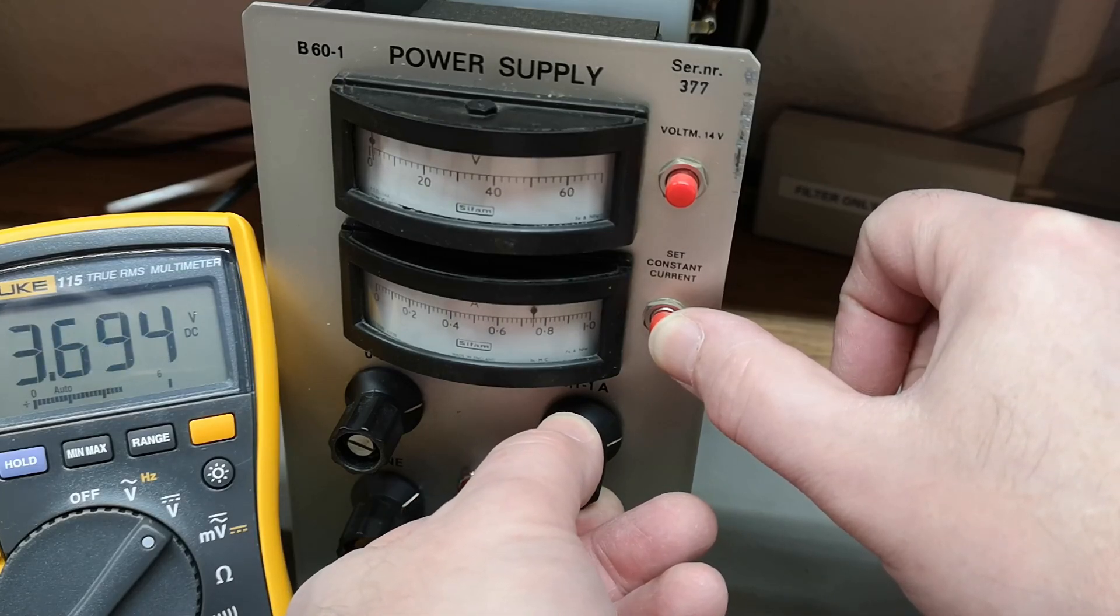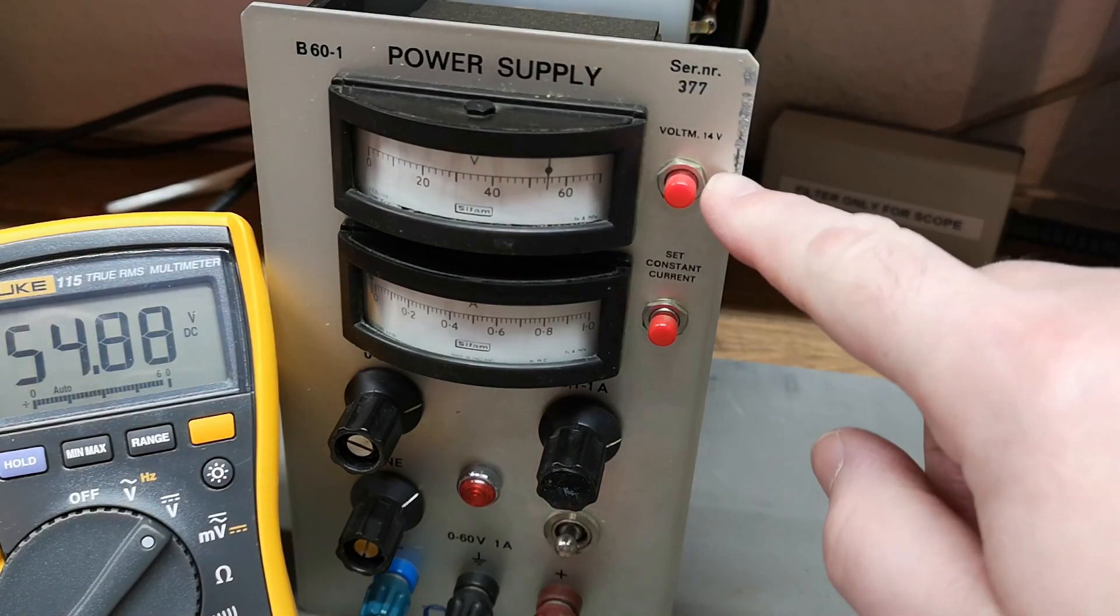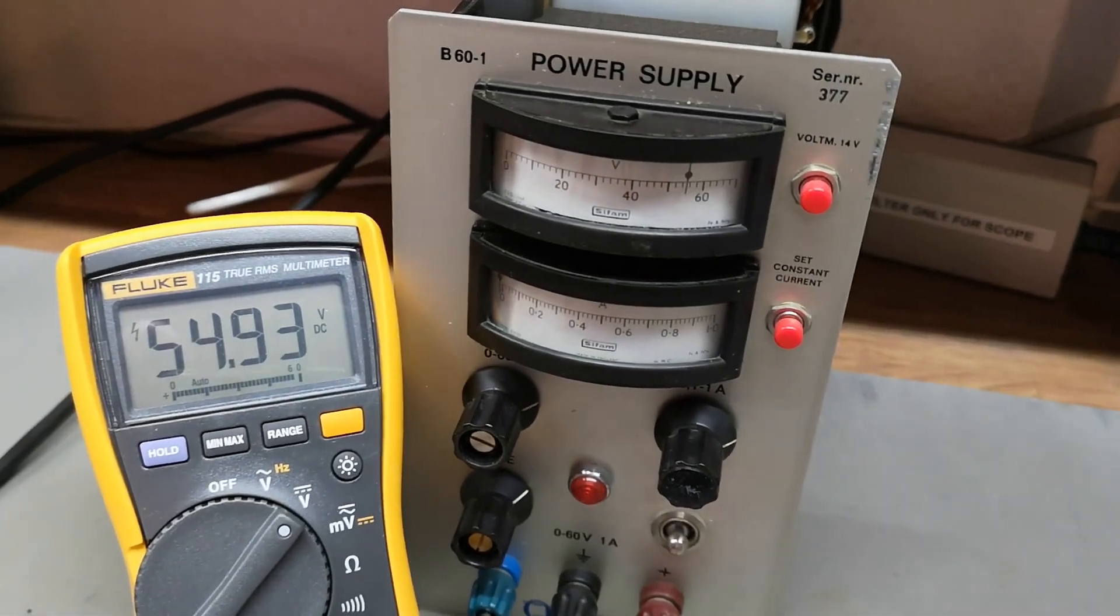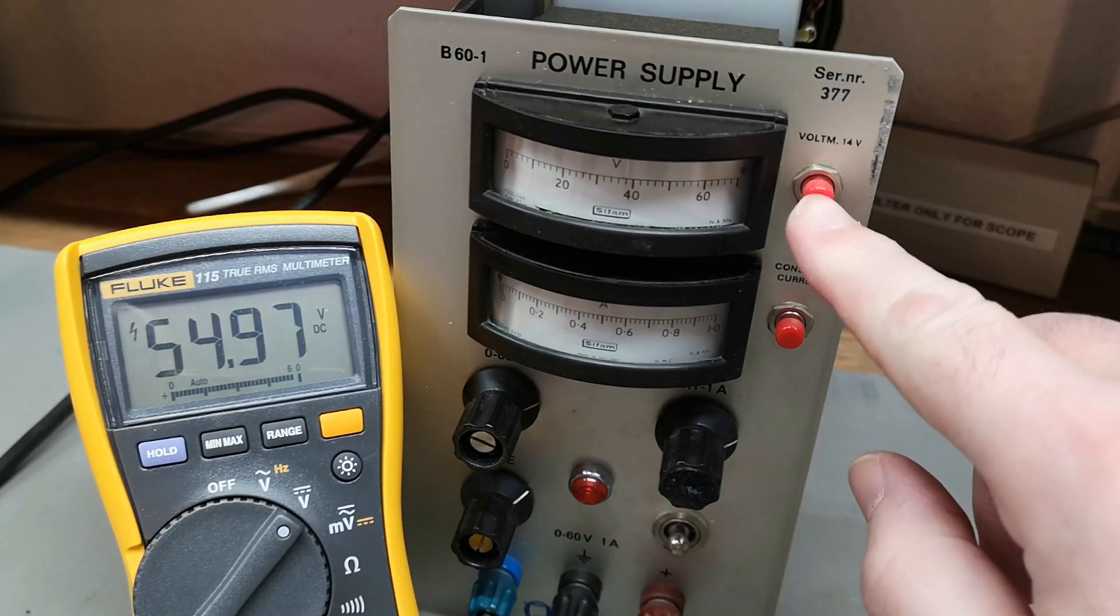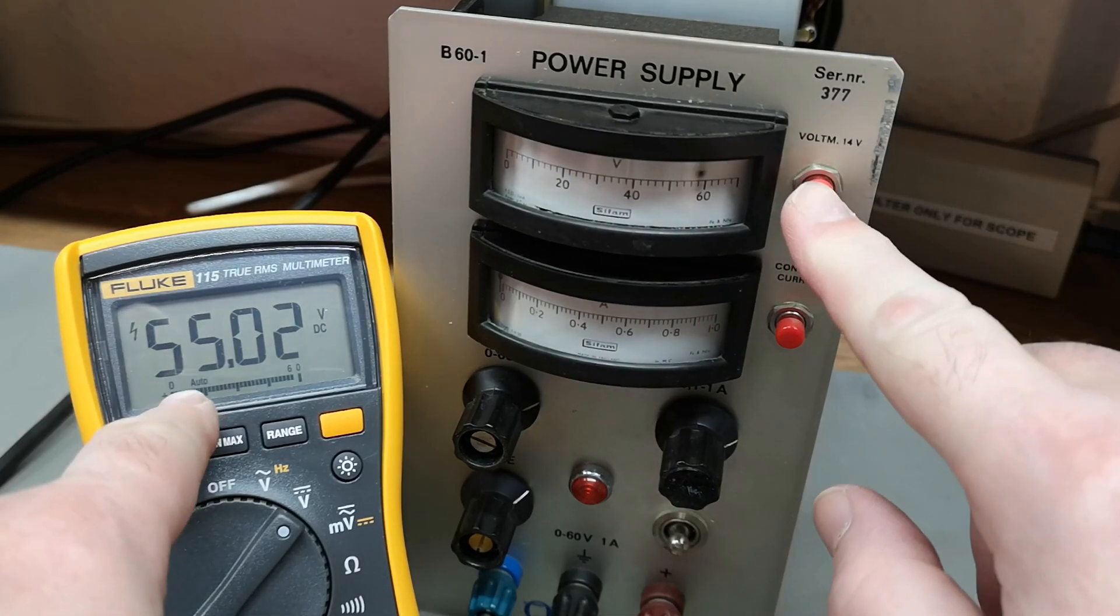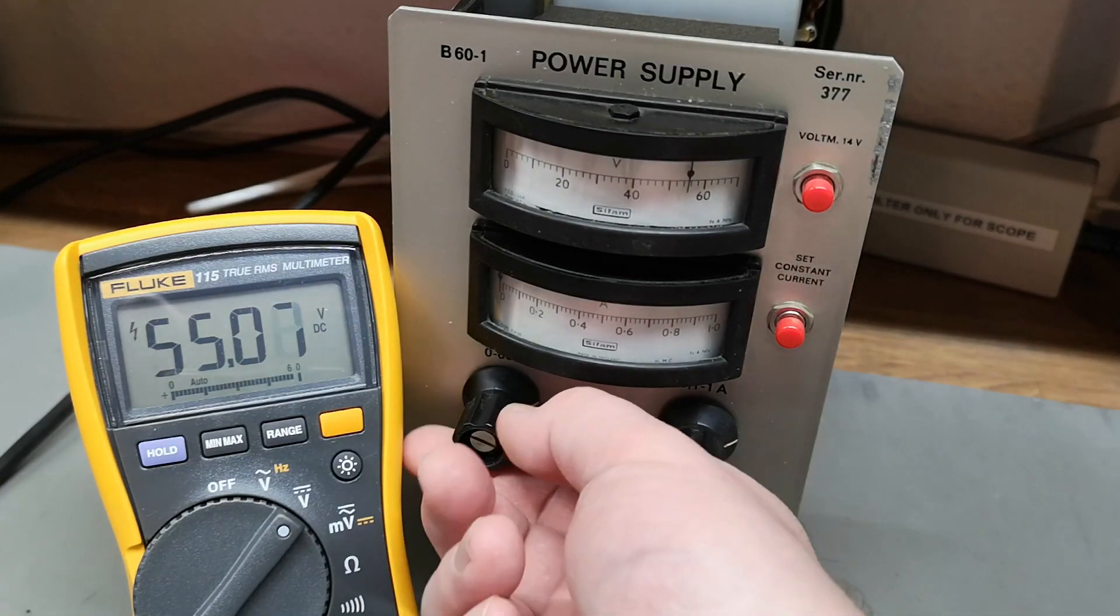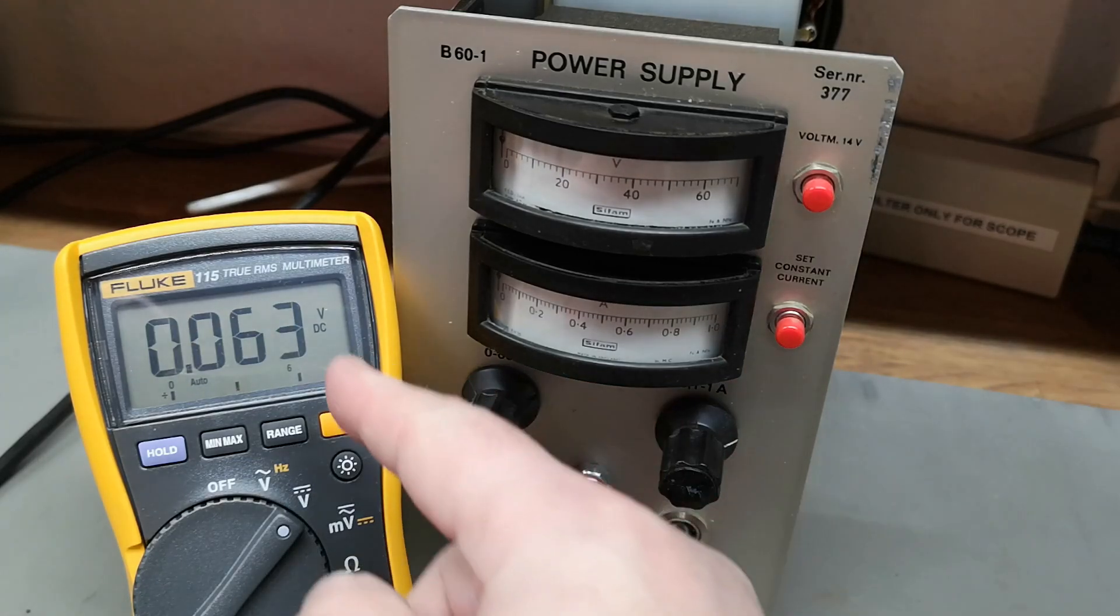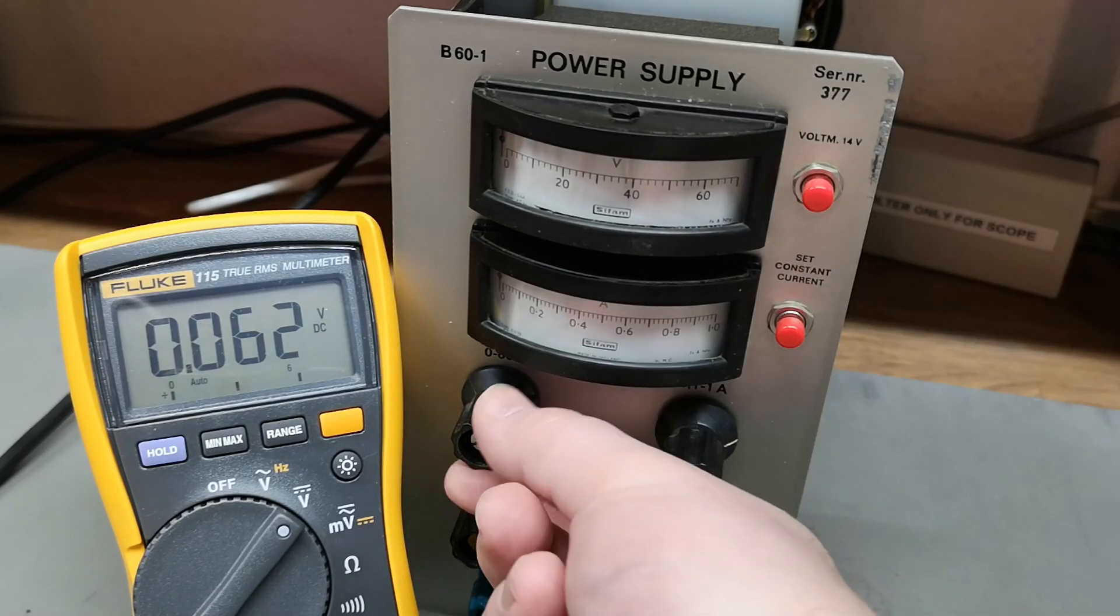But hey, this thing really works. So what is this voltmeter showing 14 volts? What is the idea? If you know, please tell me, because this meter ramps up but the output is not. What is the idea?